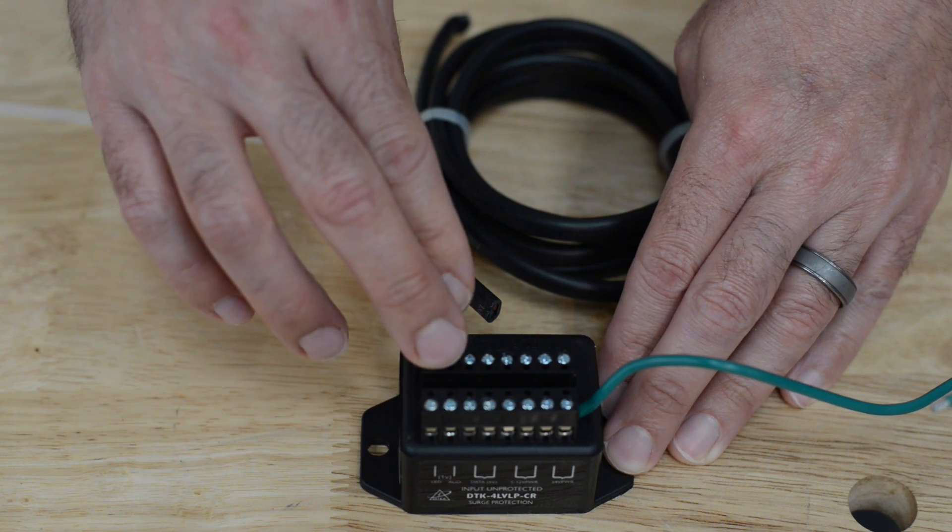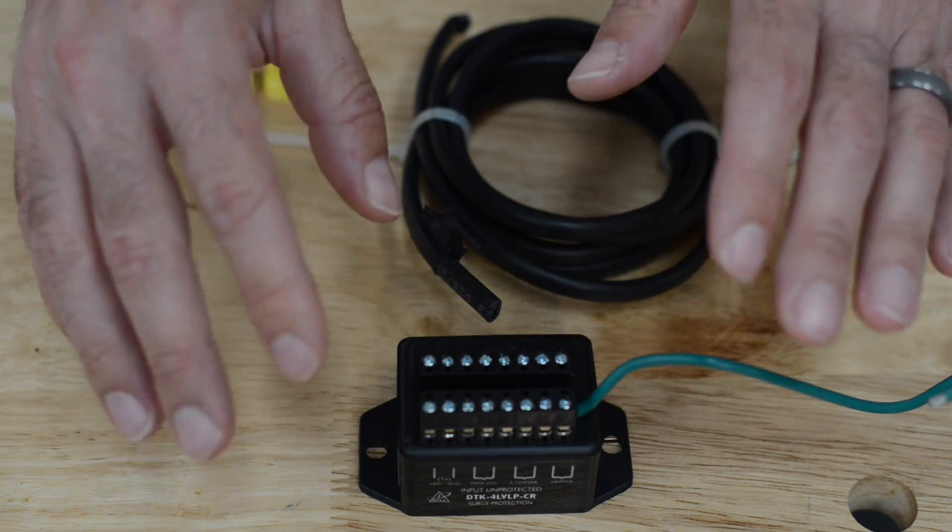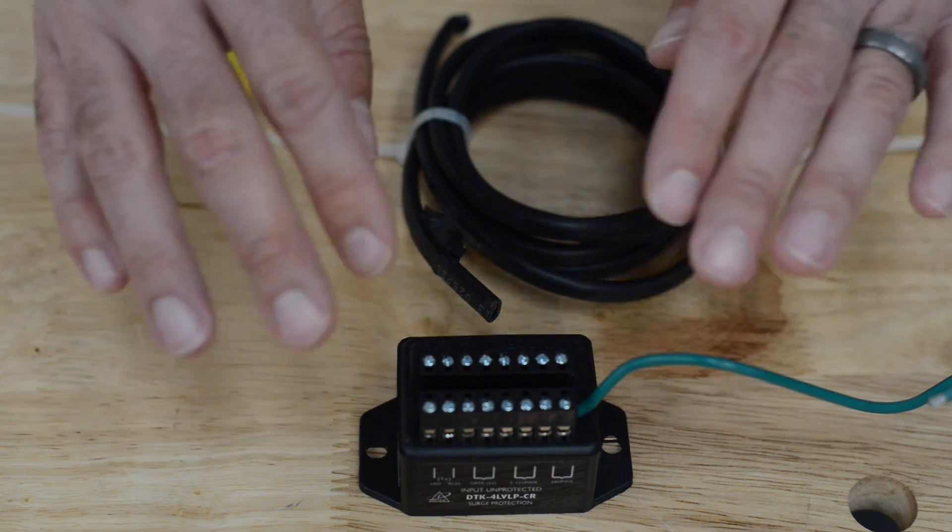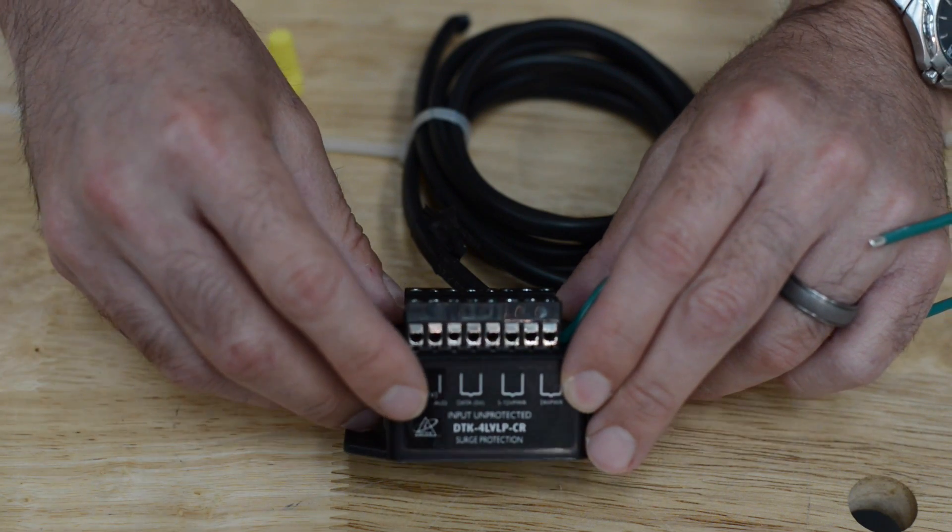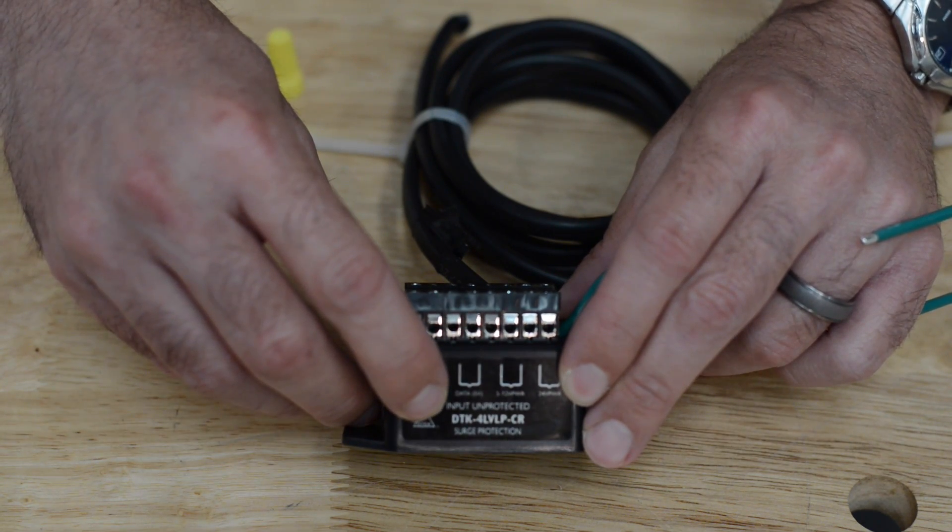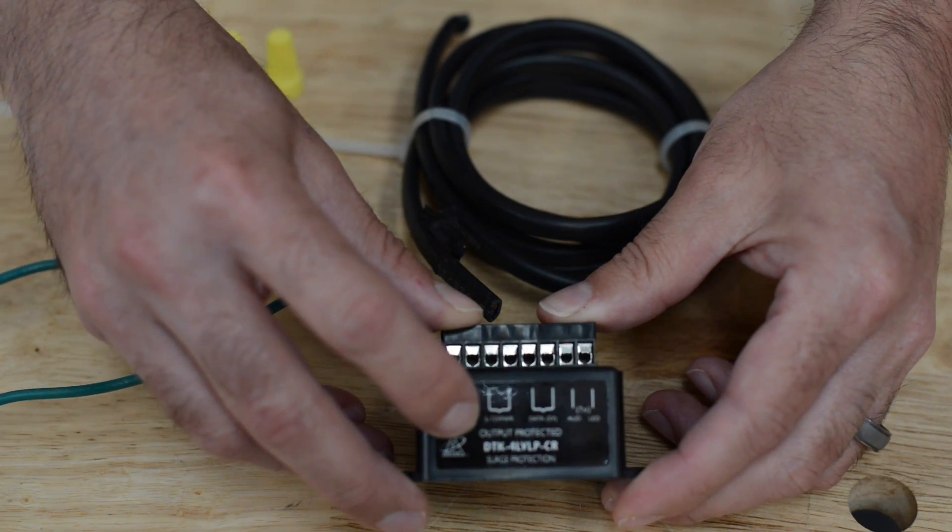To understand how to wire this to your gate opener, any wires that you have coming in that are over five feet long, you want to protect with an inline surge suppressor. You'll notice on this side it says input unprotected. On this side it says output protected.